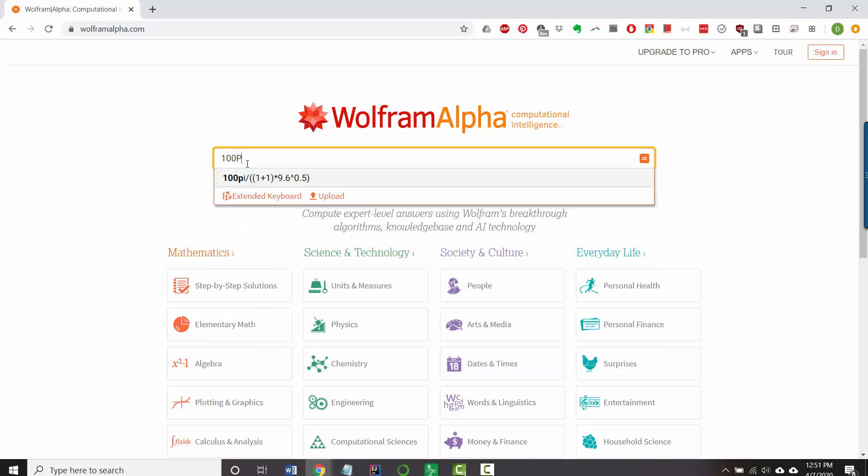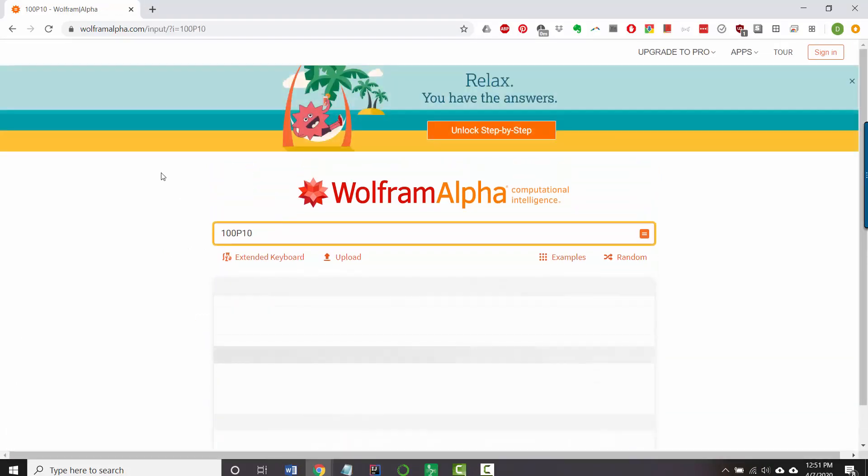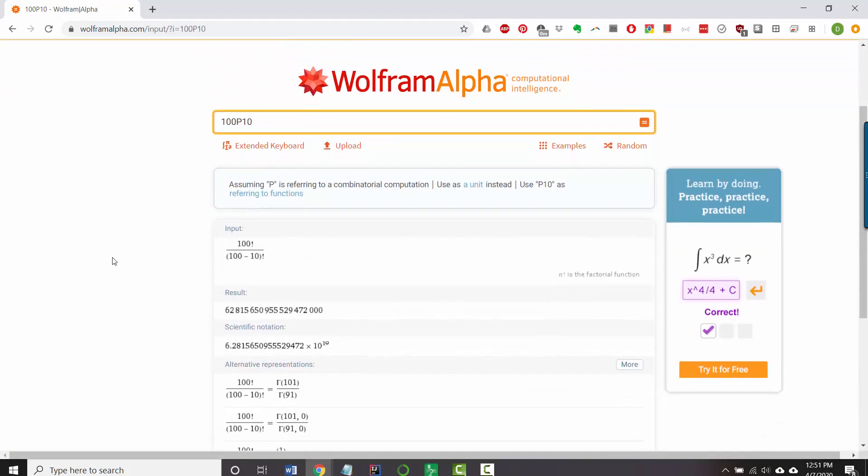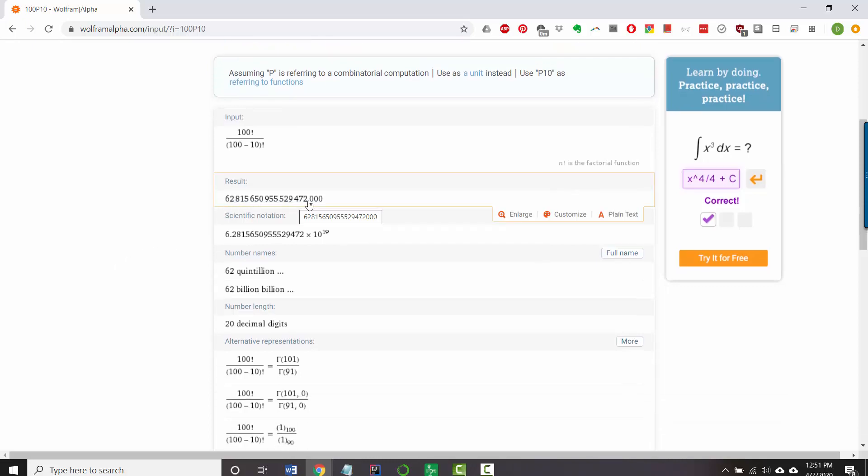So I'll say 100 P 10 and it is calculating. The answer seems to be this number here, which looks like 62 quintillion. So that's a lot of ways of placing books on shelves.